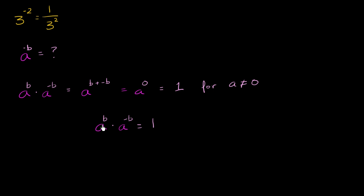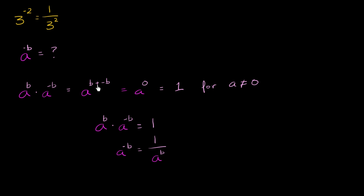So if we want to think about what a to the negative b equals, we just divide both sides by a to the b, and we get a to the negative b is equal to 1 over a to the b. It's really important to keep in mind that when you see a base raised to a negative exponent, there's a temptation to introduce a negative number — but a negative exponent is really about taking the reciprocal.